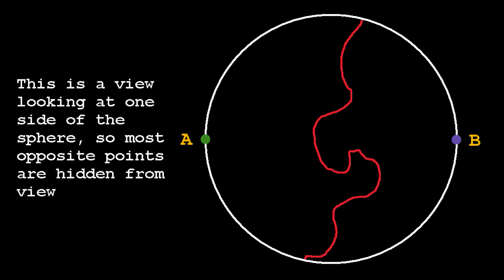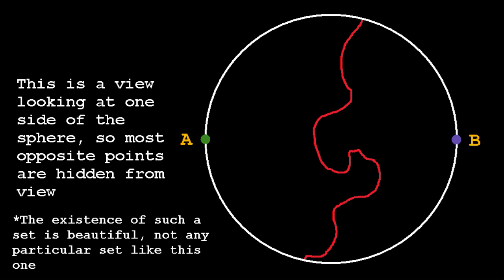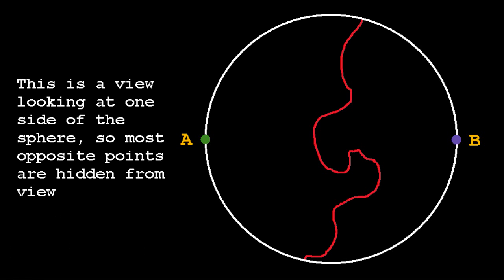This club, or mathematically speaking, this set, is beautiful. It's an unbroken line around the sphere of pairs of points which are both opposite and of equal temperature, which must exist for any sphere with temperature, like the Earth's surface.